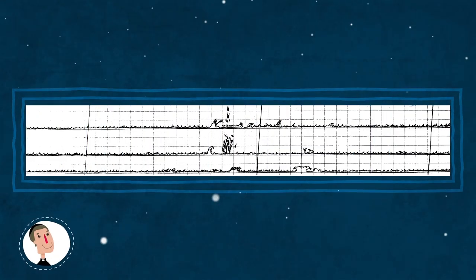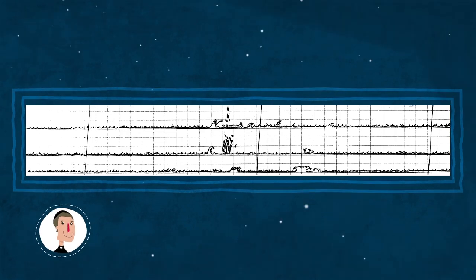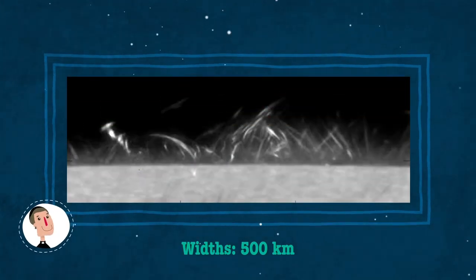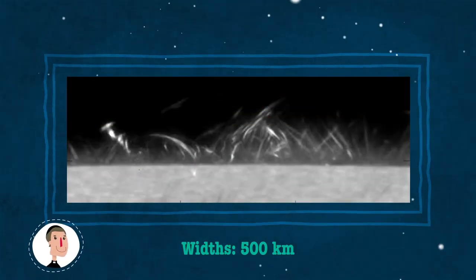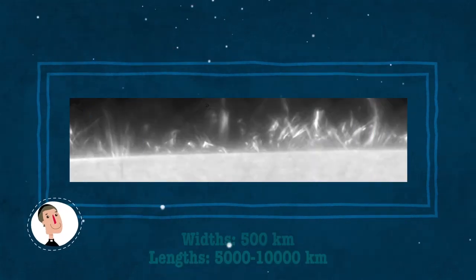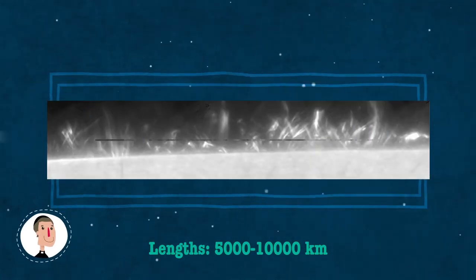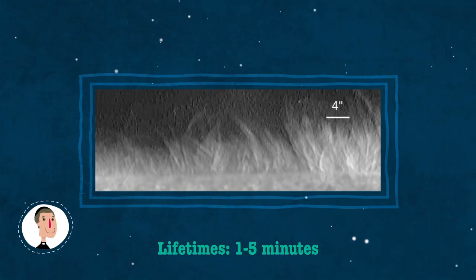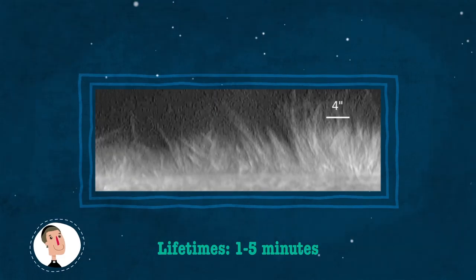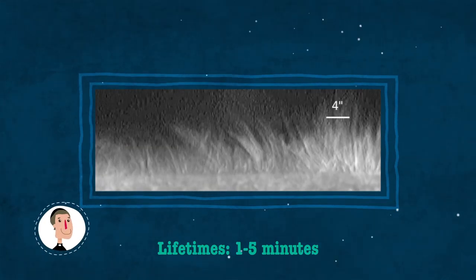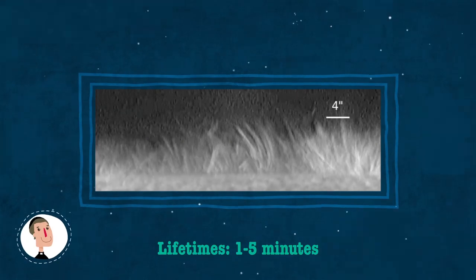Spikulen sind sehr schmale und lange Gasströme in der Sonnenatmosphäre. Sie haben Breiten von 500 Kilometern und Längen von mehreren tausend Kilometern. Ihre Lebensspanne ist sehr kurz, nur wenige Minuten. Ununterbrochen entstehen sie und verschwinden wieder.